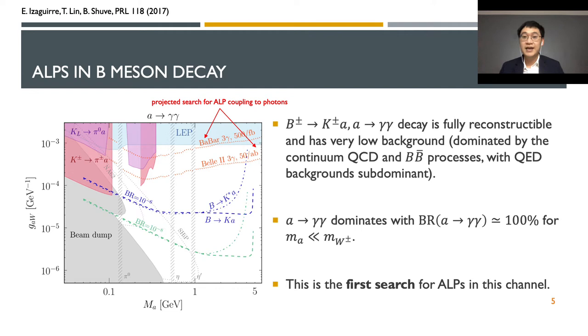In this process, we set the branching fraction of axion-like decay into a pair of photons to be almost 100% and axion mass is much smaller than the electroweak boson masses. This is the first search for axion-like particles in this decay channel.